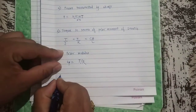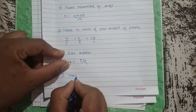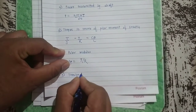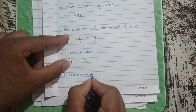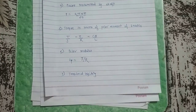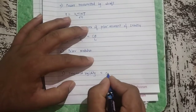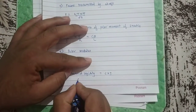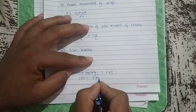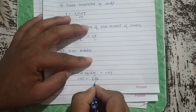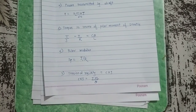Seventh: torsional rigidity. The strength of the shaft is equal to C into J, therefore C into J is equal to T into L divided by θ. These are the important formulae. By using these formulae we are going to see the numericals.